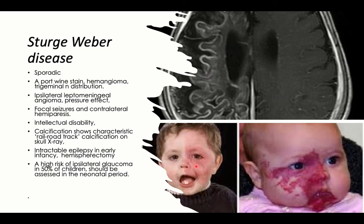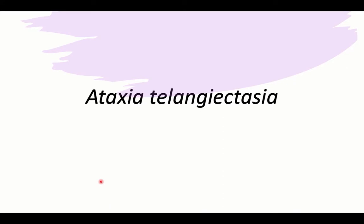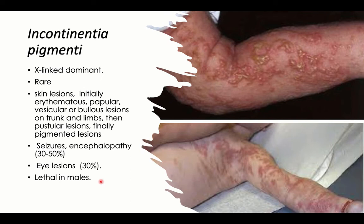The next neurocutaneous syndrome is ataxia telangiectasia, which has already been discussed. Another is incontinentia pigmenti, which has an X-linked dominant pattern of inheritance — meaning one mutant gene on one X chromosome is sufficient to express the disease.